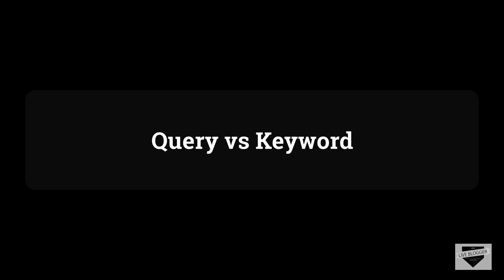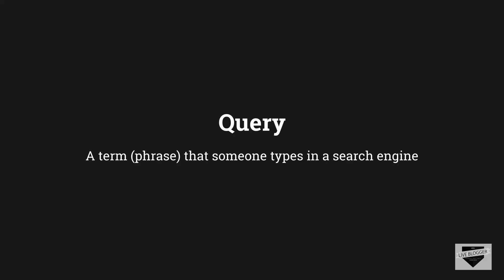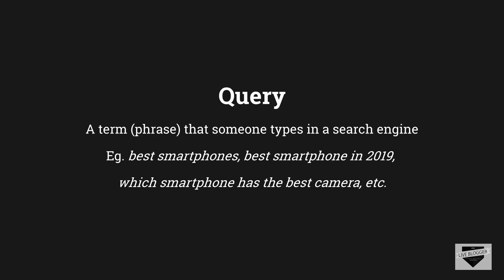First of all, let's see what a query actually is. A query — also called a search query or search term — is a term or a set of words that a user types into a search engine when he wants to search for something. For example, if a user wants to buy a smartphone, he may type search queries like "best smartphones," "which smartphone has the best camera," "buy a new smartphone," or "which is the best smartphone."